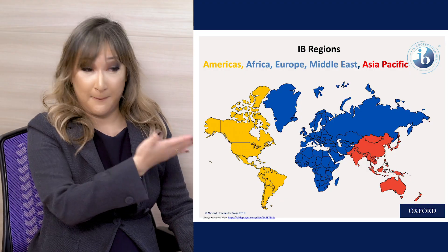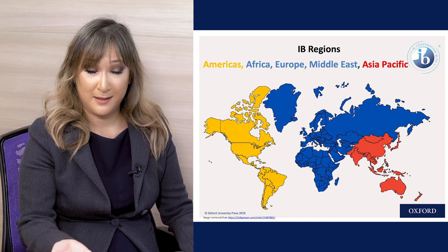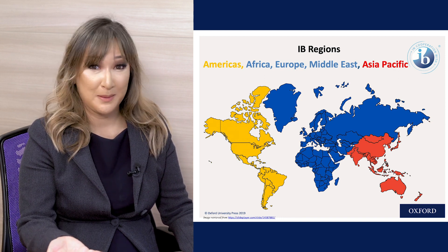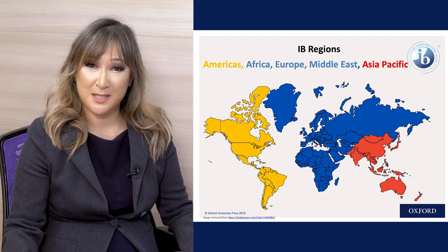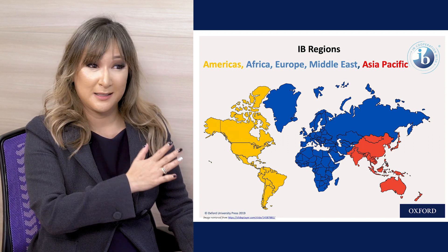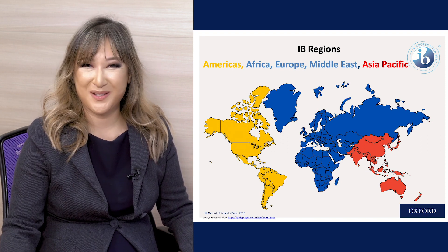So how do we help our students in terms of university guidance and recognition? What are the general trends? The IB is divided into three regions: the Americas region, Africa/Europe and Middle East, and the Asia-Pacific region, which I've coloured yellow, blue and red for easy reference. Let's start by looking at the universities in the IB Americas region.